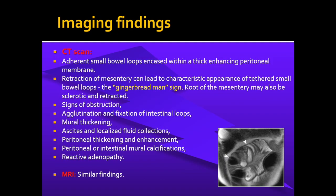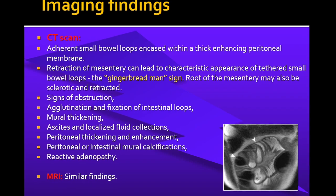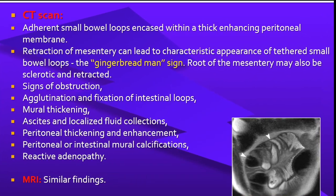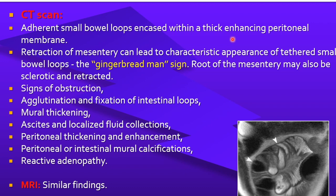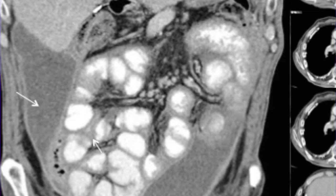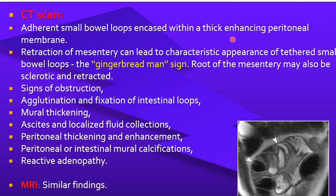On CT scan, which forms the mainstay of diagnosis, one can see signs of peritonitis, signs of bowel obstruction and multiple adhesions. Adherent small bowel loops are encased within a thick enhancing peritoneal membrane, and demonstration of this enhancing peritoneal membrane is very important for diagnosis. Retraction of the mesentery leads to a characteristic appearance called the gingerbread men's sign. Other CT findings include agglutination and fixation of intestinal loops, mural thickening, ascites and local fluid collections, peritoneal thickening with enhancement, peritoneal and intestinal mural calcification, and reactive adenopathy in the mesentery, retroperitoneum and other abdominopelvic regions.